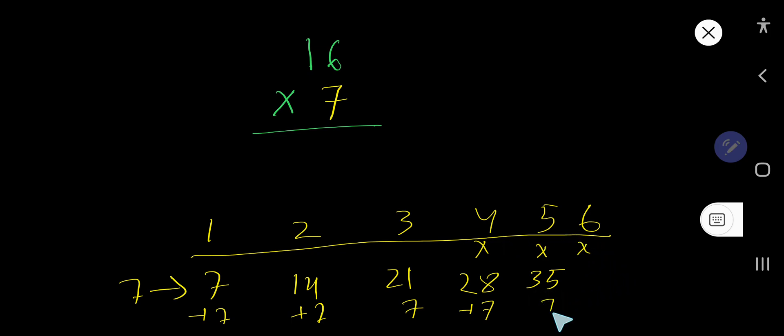7 times 6 equal to, look, just add 7. That is 7 plus 5, 12, right? 2, carry 1. That is 3 plus 1, 4, 42, right? That is 7 times 6 equal to 42. This is the way to find out the multiplication table of any number.